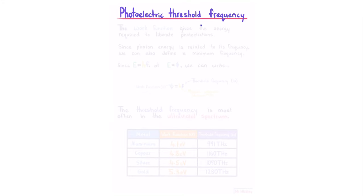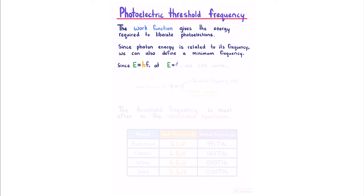Photoelectric threshold frequency. The work function gives the energy required to liberate photoelectrons. Since photon energy is related to its frequency, we can also define a minimum frequency. Since E equals HF, at E equals the work function, we can write that the work function is HF, where our F is the threshold frequency. The threshold frequency is most often in the ultraviolet spectrum.